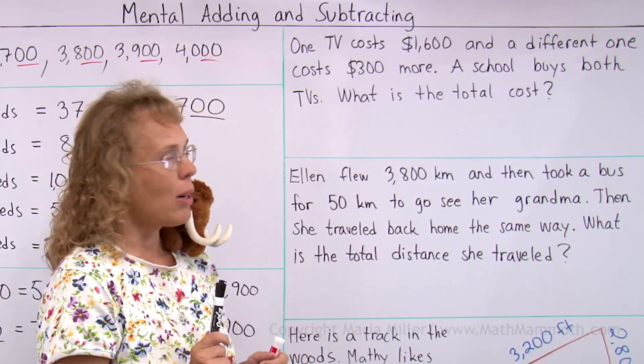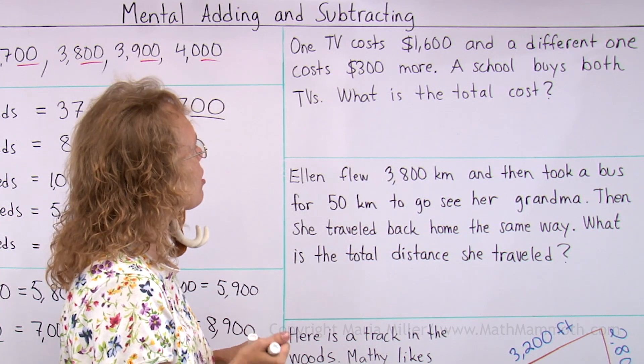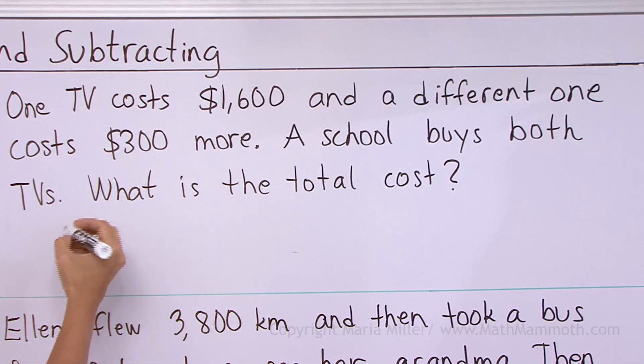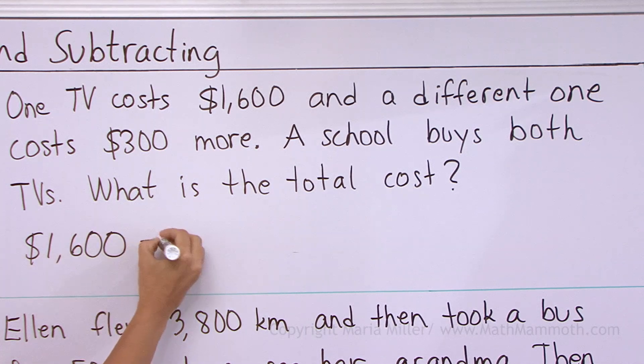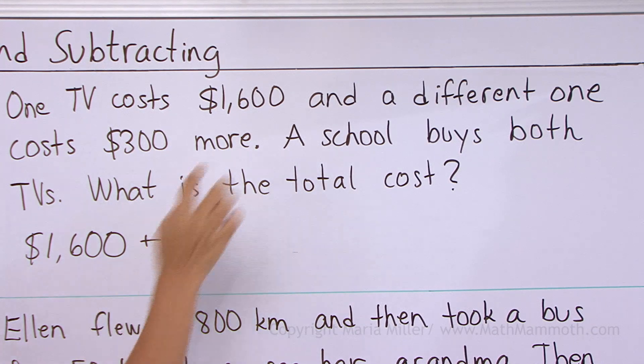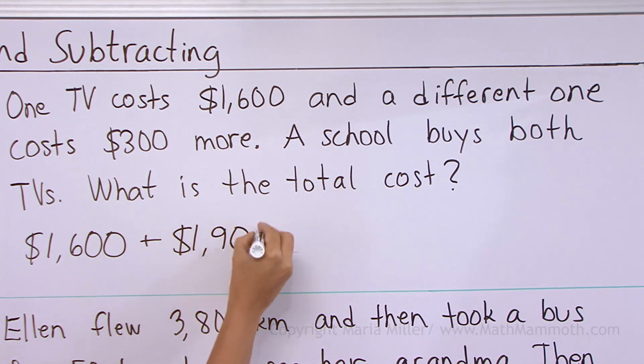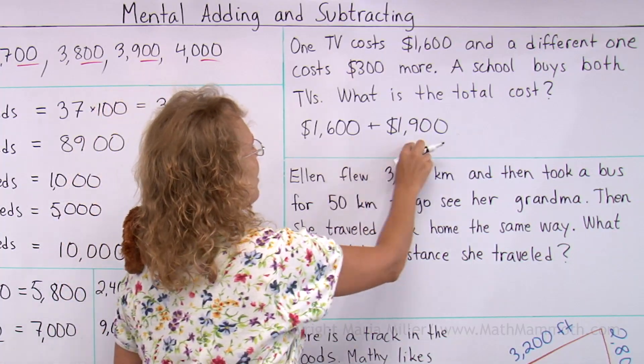So what is the total cost? A school buys two TVs here, so we need to add. Okay, the one TV costs $1,600. How much does the second TV cost? It doesn't say. It says that it costs $300 more than that. So we add $300 and $1,600. So that's $1,900.